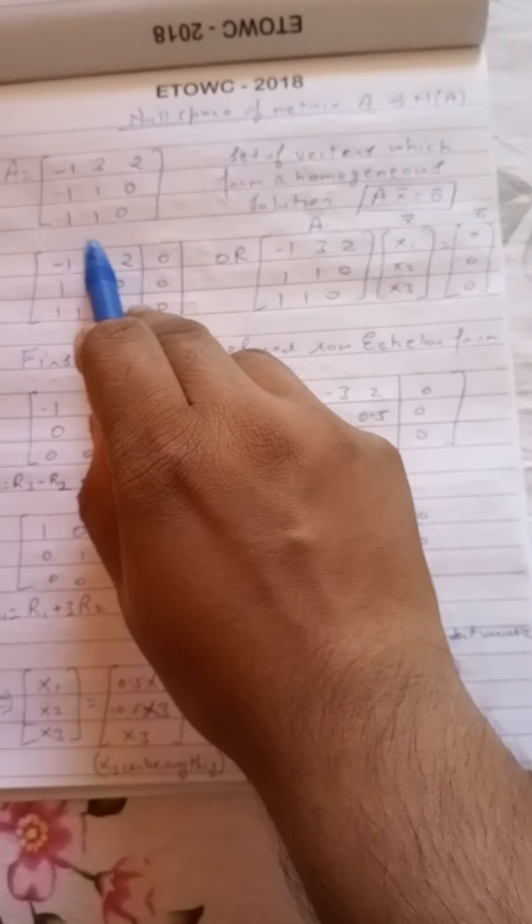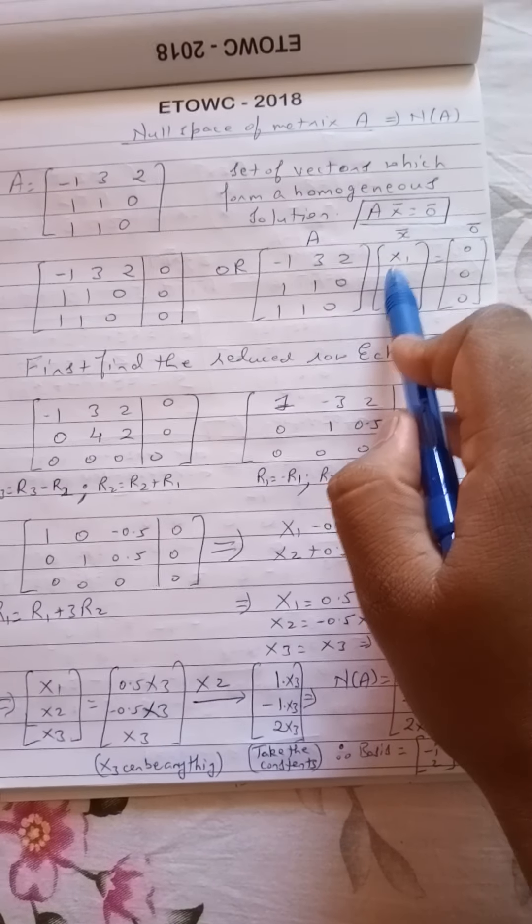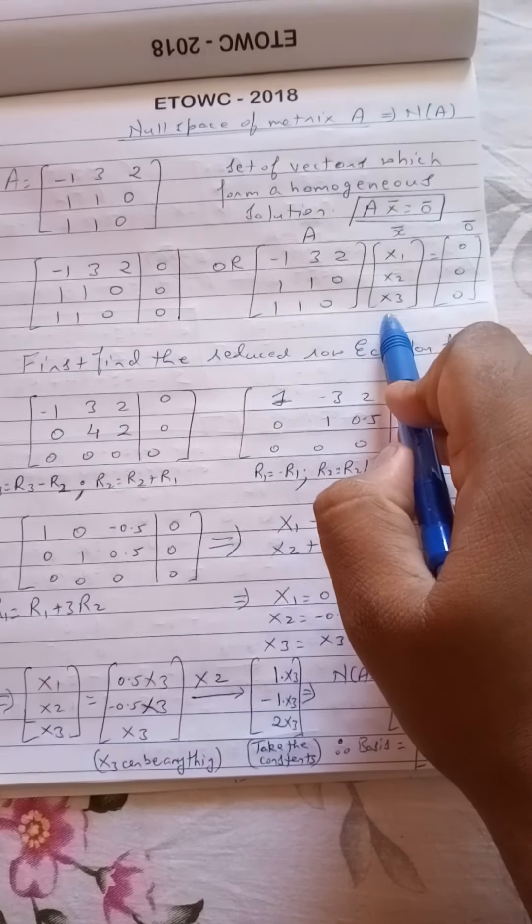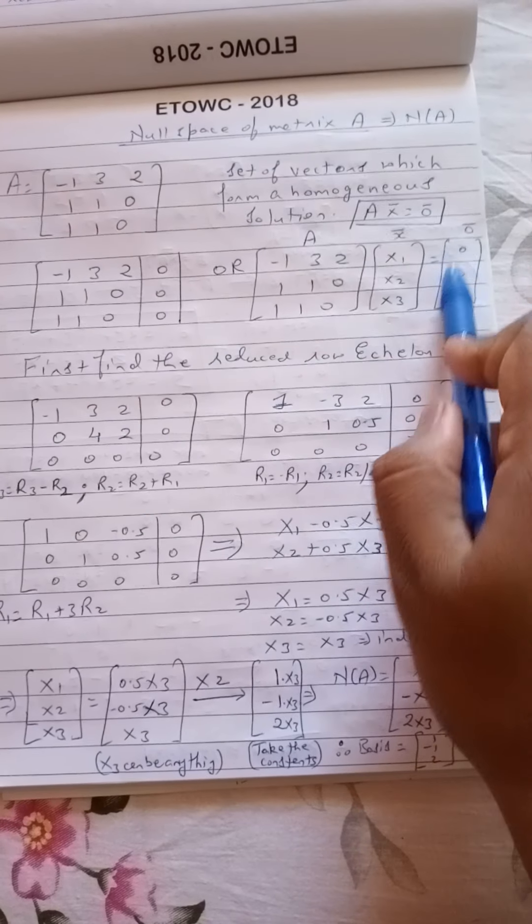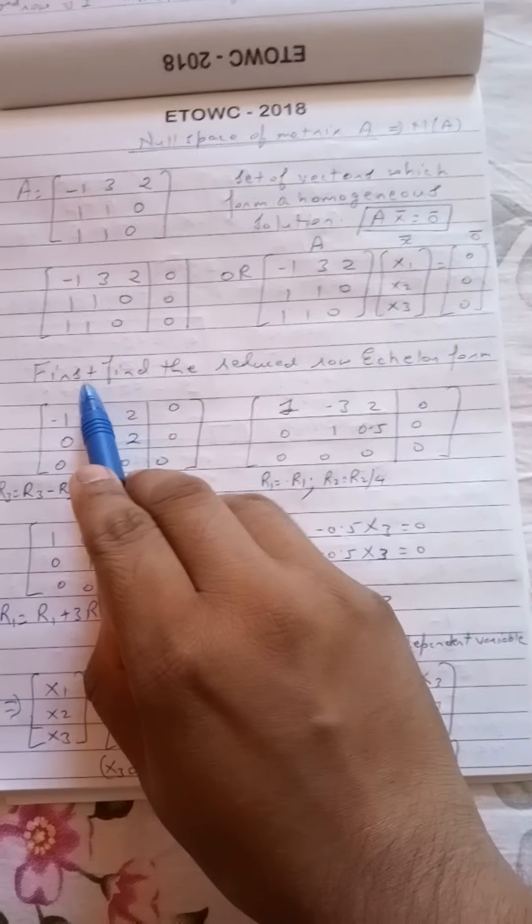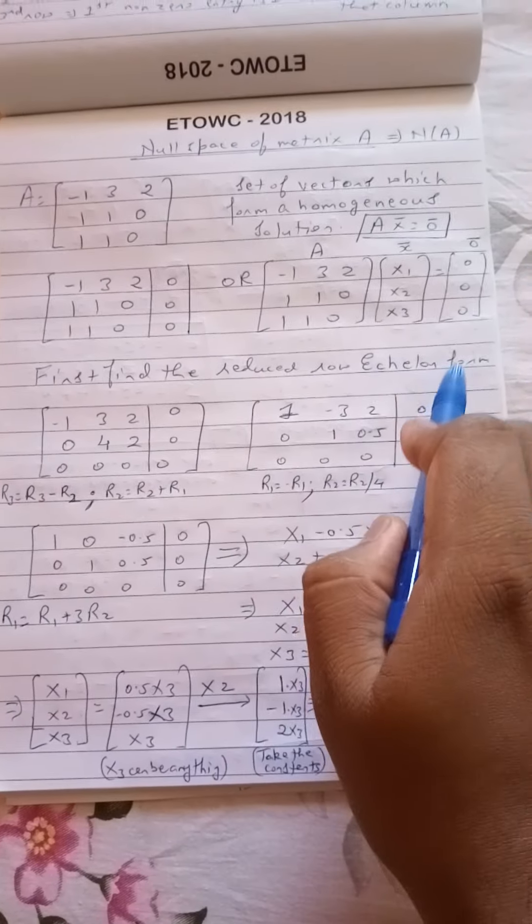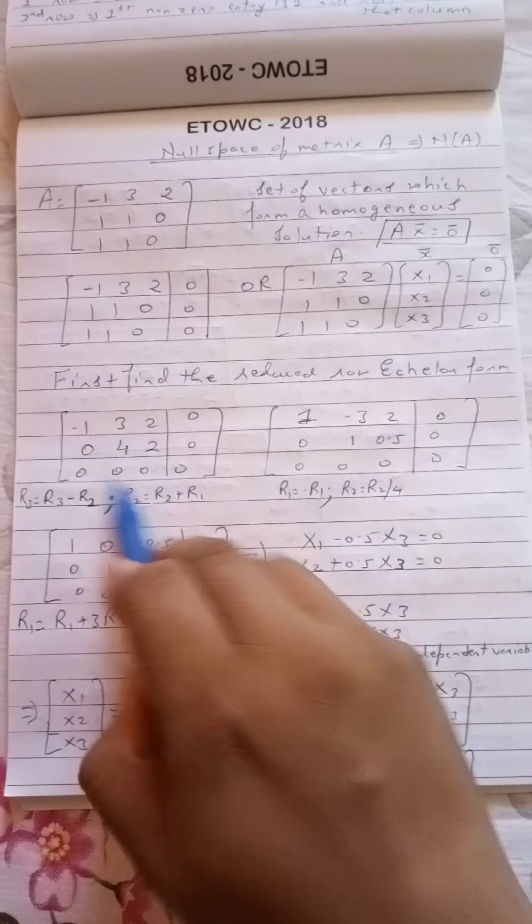Or you can write this matrix as for clarity minus 1, 3, 2, 1, 1, 0, 1, 1, 0, which is the matrix, into X bar. So I write this as X1, X2, X3 as the X vector, and 0, 0, 0 as the 0 vector.